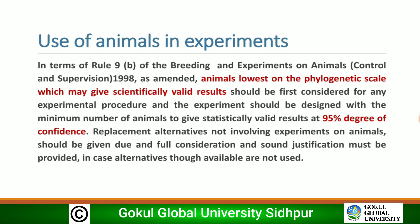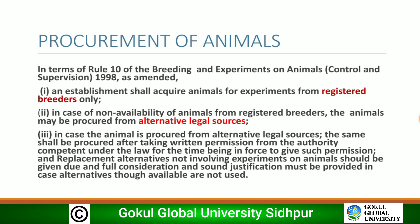The use of animals in experiments, per Rule 9(b) of the Breeding and Experiments on Animals (Control and Supervision) Rules 1998, states that animals lowest on the phylogenetic scale which may give scientifically valid results should be given first consideration. Experiments should be designed with the minimum number of animals to give statistically valid results at a 95% degree of confidence. Replacement alternatives not involving experiments on animals should be given due and full consideration.